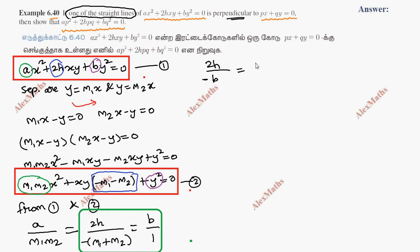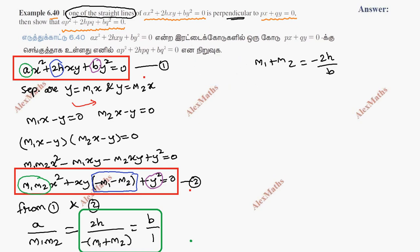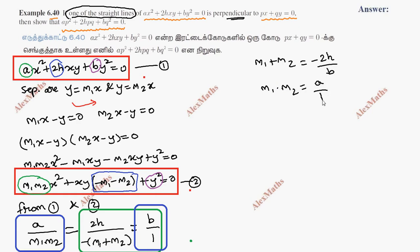From the combined equation, m1 plus m2 value is equal to minus 2h by b, and m1 into m2 equal to a by b.